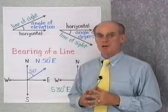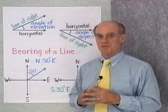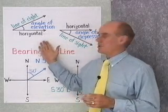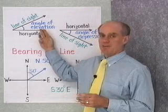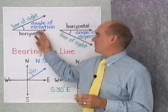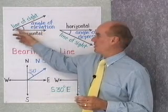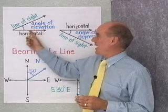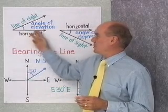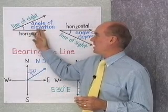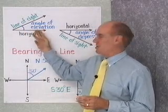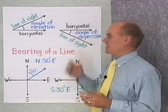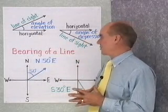Next, we're going to do some application problems that involve the trigonometric functions, and we have a couple more definitions that we need. First of all, the angle of elevation is measured from the horizontal up. So if your line of sight is up from the horizontal, we call that angle the angle of elevation. If you look down from the horizontal, that's called the angle of depression.